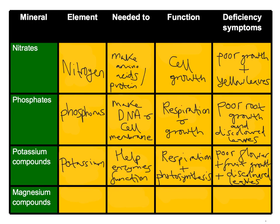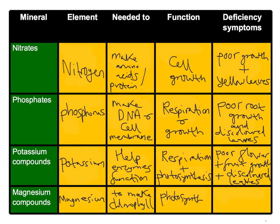That just leaves magnesium compounds. The element is magnesium. Magnesium is needed to make chlorophyll - really crucial for photosynthesis. The function is simply photosynthesis: absorbing sunlight and producing sugars. A really obvious deficiency symptom to look for is yellowing of the leaves. So there we have some really key minerals that plants need, and we've talked about the deficiency symptoms should they be missing. Hope all that helps.